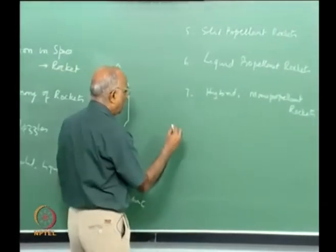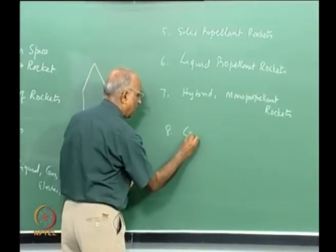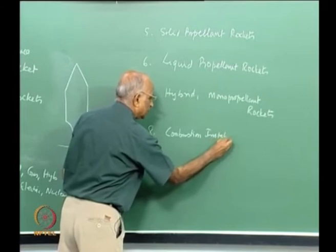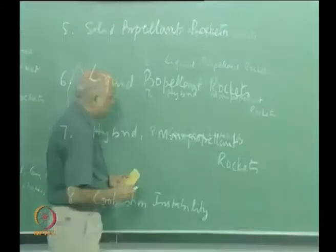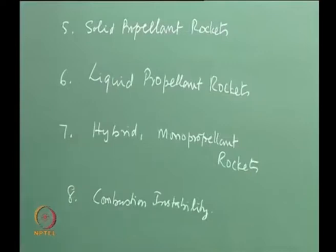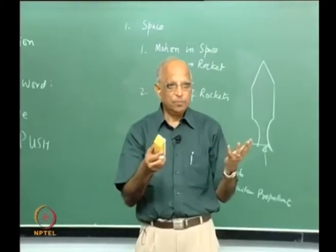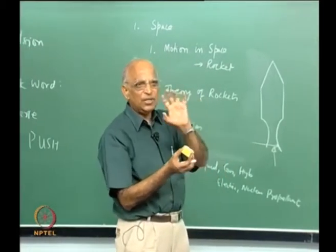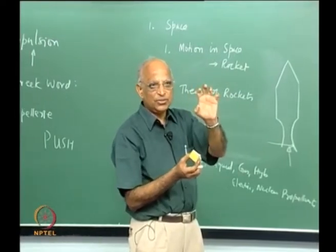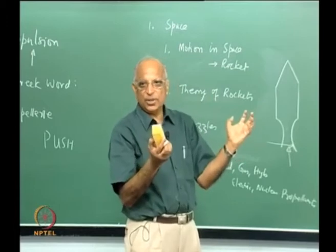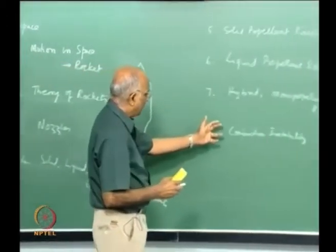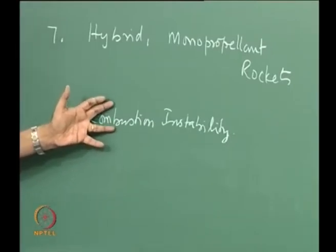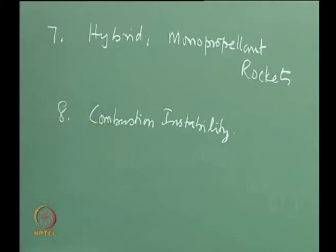The seventh chapter covers hybrid rockets and monopropellant rockets. This finishes the different types of rockets, their features, and problem areas. Then we move to an advanced subject: combustion instability, which is important for postgraduate and research students. We study what causes thrust oscillation instead of steady thrust, and whether a rocket could explode instead of burning steadily. This will be covered in six to seven classes, and is an active area of research.